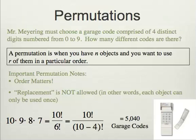So, the key there is you have N objects. You want to choose R. The order does matter. And you cannot replace them. So, that's permutation.